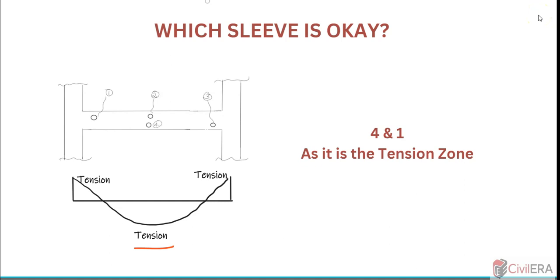So in the tension zones, your concrete is not taking any tension, and hence you can afford to have a sleeve in the tension zone. So if you ask me, 4 and 1 are tension zones here, and there you can allow sleeves. If it's a minor opening, then you will have to ensure that the cover to rebars are not compromised.